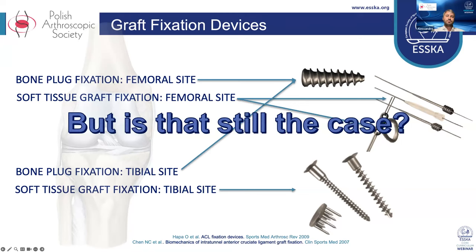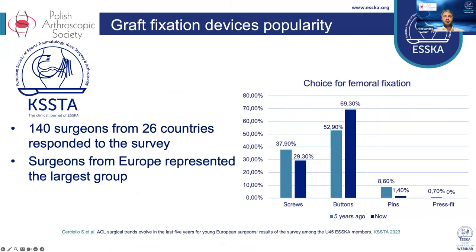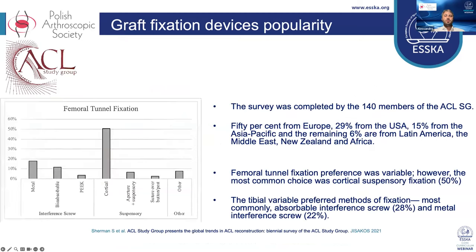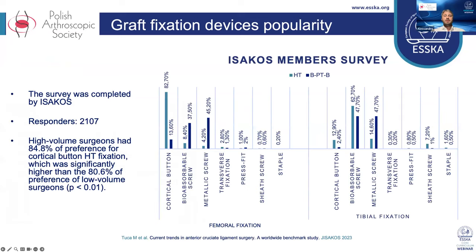Interference screw fixation for BTB-ACL graft has been well studied. A screw inserted in the tunnel creates friction between the bone plug and tunnel wall by compression and by engagement of screw threads. This has been proven a reliable fixation method. However, in soft tissue fixation, the compressibility of the graft and lack of screw thread engagement result in less friction, so cortical or cancellous fixation was preferred. A recent ESCA survey of knee surgeons under 45 showed significant increase in preference for femoral fixation with cortical suspension compared to five years ago, with interference screw remaining second most popular. The 2021 ACL Study Group survey showed more than 50% prefer femoral fixation with cortical suspensory fixation, but more than 50% still prefer tibial interference screw fixation.